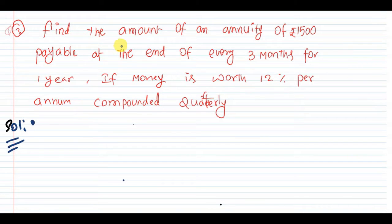Find the amount of an annuity of 1500 payable at the end of every 3 months. That means the payment was 1500 and it was paid at the end of every 3 months.